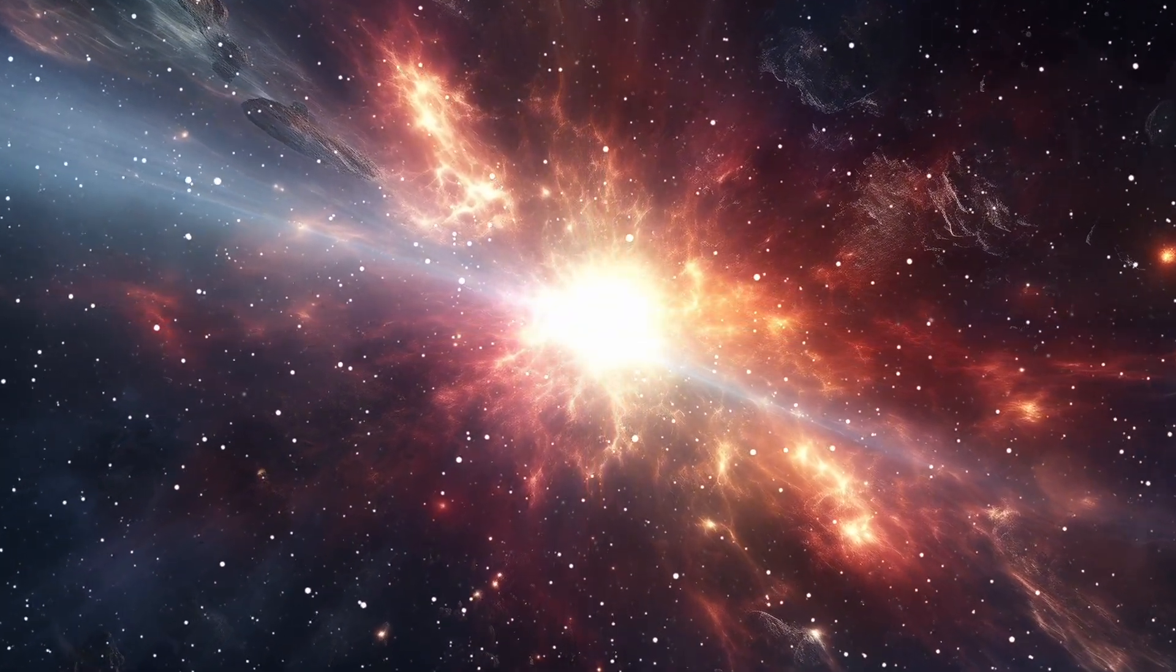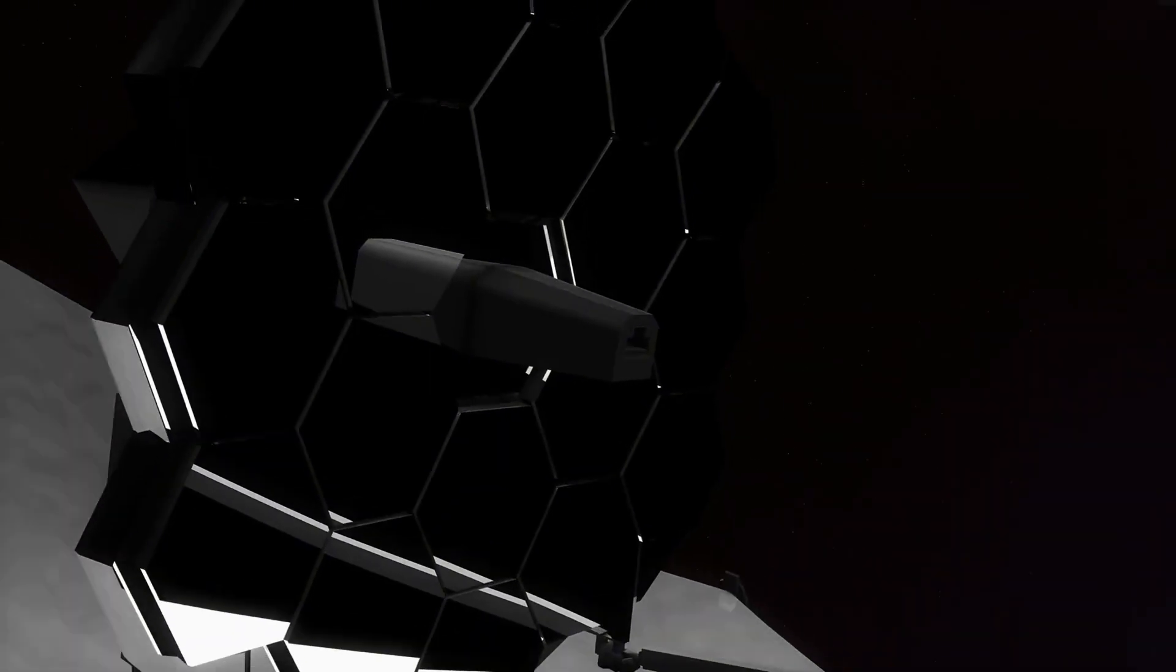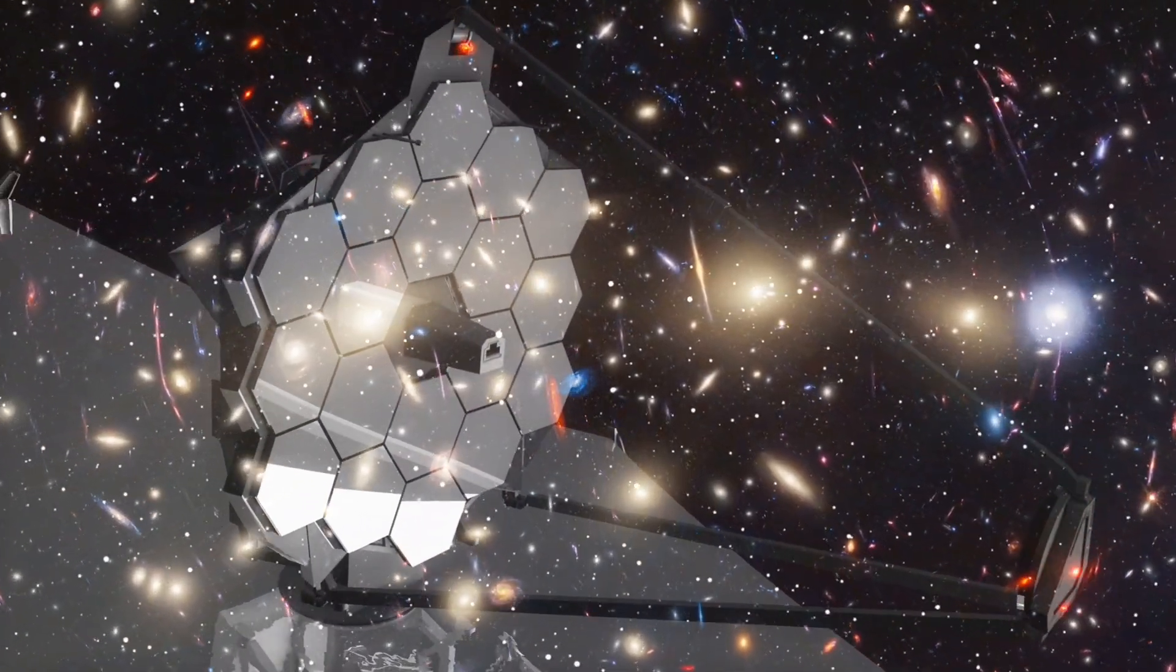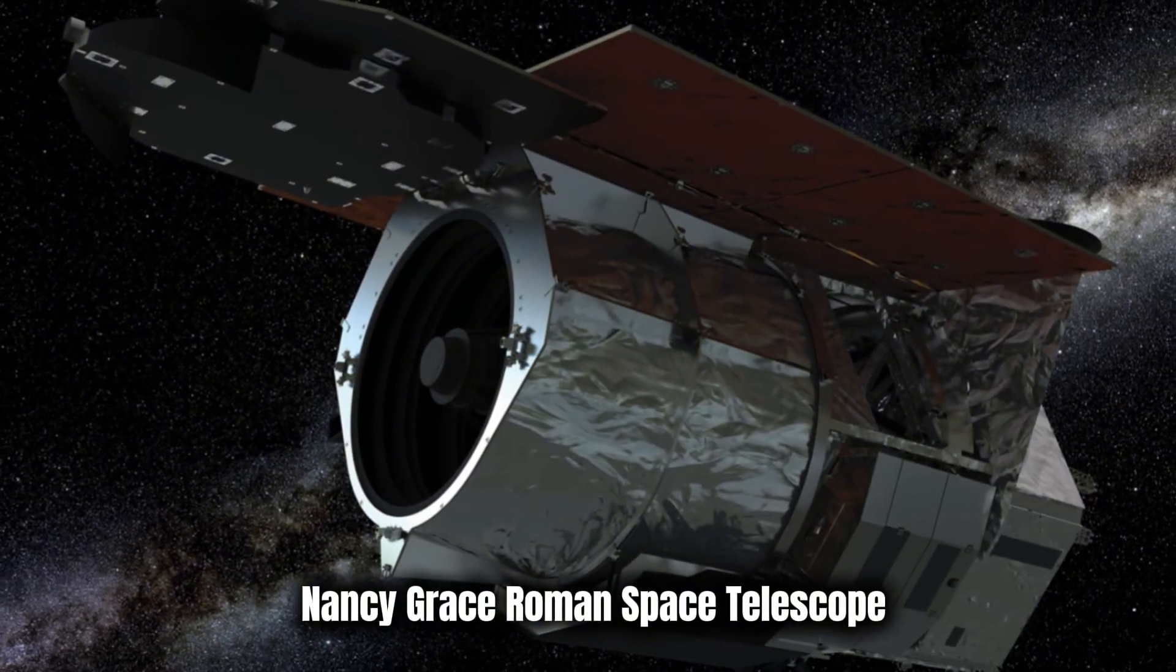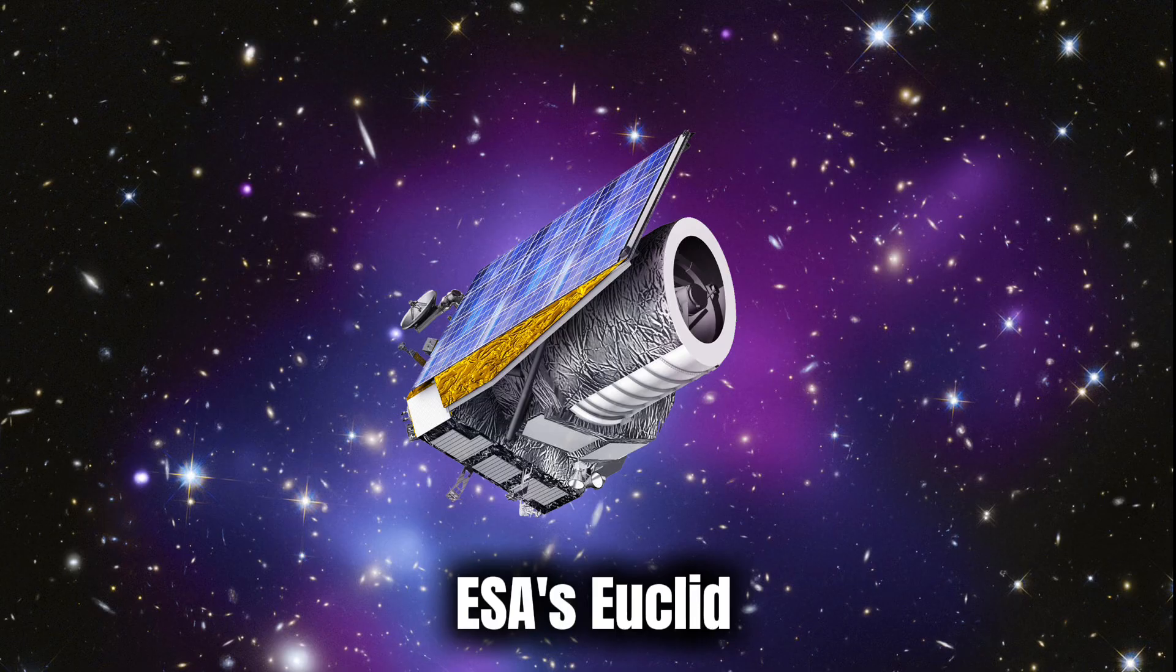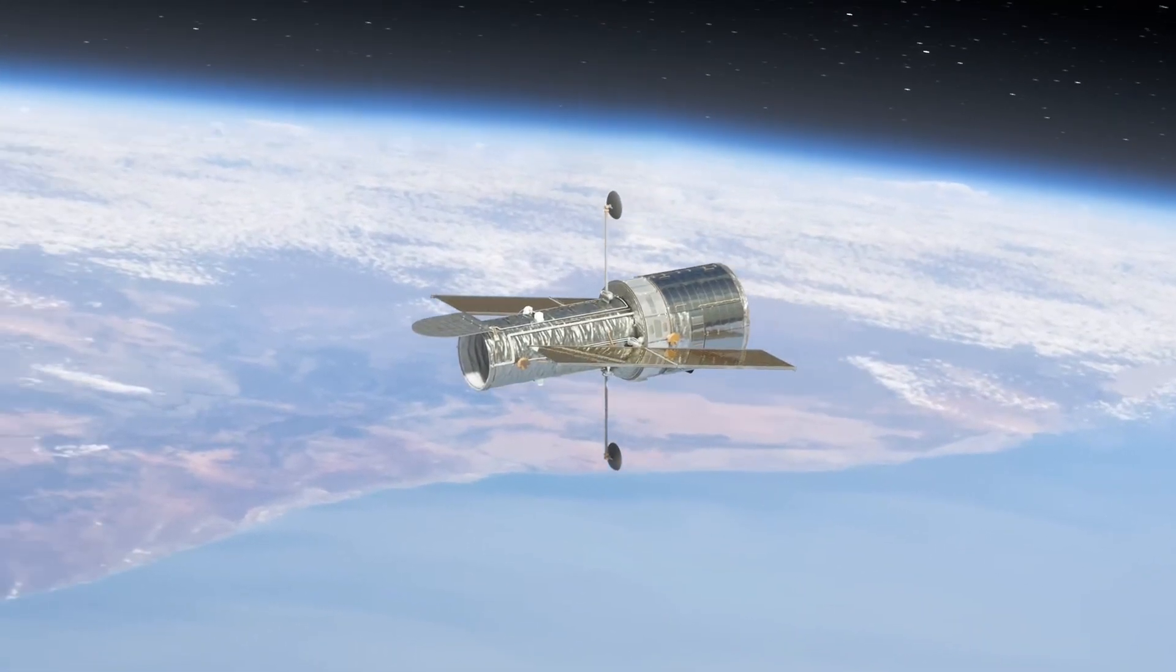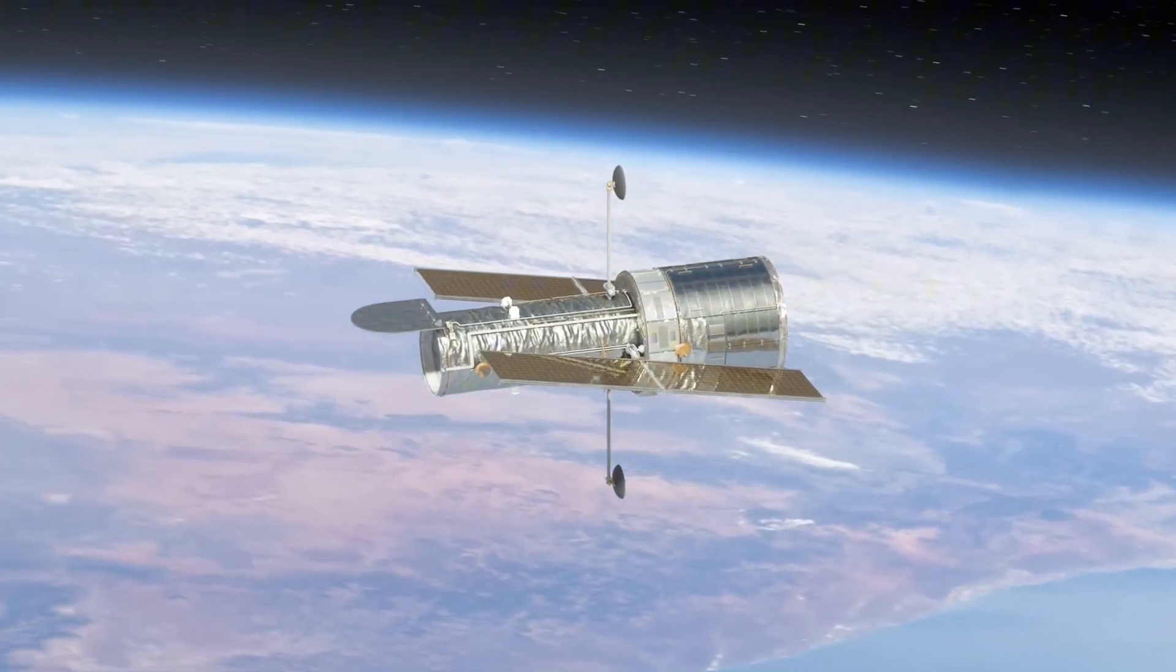As surprising as MOMZ 14 is, it's likely just the beginning. The James Webb Space Telescope has only scratched the surface of its observational capabilities. As it continues to peer deeper into the cosmos, we can expect more paradigm-shifting discoveries. Already, upcoming missions like the Nancy Grace Roman Space Telescope and the European Space Agency's Euclid are being tailored with these anomalies in mind. These next-generation observatories will broaden our capacity to survey distant galaxies, measure dark energy, and map cosmic structure on unprecedented scales.